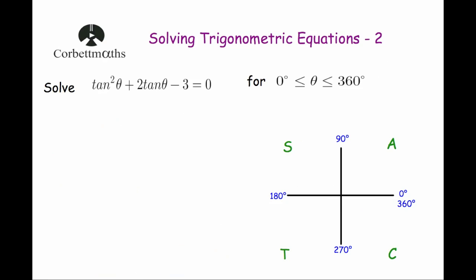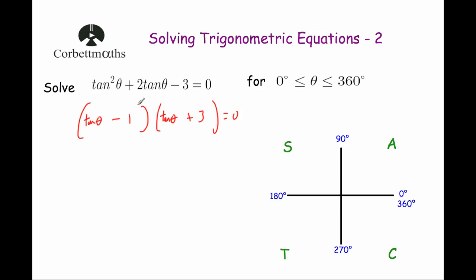Our next example: solve tan squared θ plus 2 tan θ minus 3 equals zero. This looks like the quadratic x squared plus 2x minus 3 equals zero, so we factorize into two brackets. We need factors that multiply to minus 3 and add to 2, so we use plus 3 and minus 1. This gives the brackets (tan θ plus 3)(tan θ minus 1) equals zero.